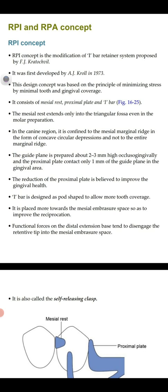The reduction of the proximal plate — contacting only 1 mm in the gingival area — is believed to improve gingival health. The I-bar is designed in a port shape to allow more tooth coverage. It is placed more toward the mesial embrasure space so as to improve reciprocation. Functional forces and the distal extension base tend to disengage the retentive tip into the mesial embrasure space; therefore it is also called the self-releasing clasp.